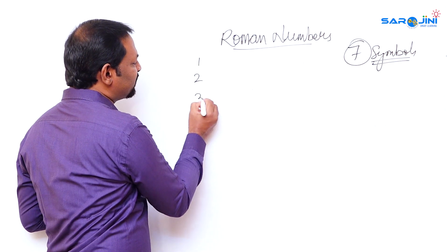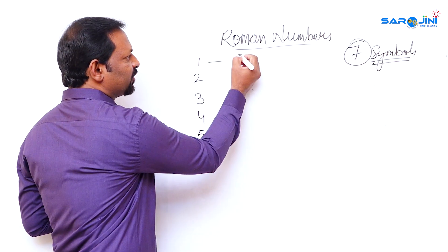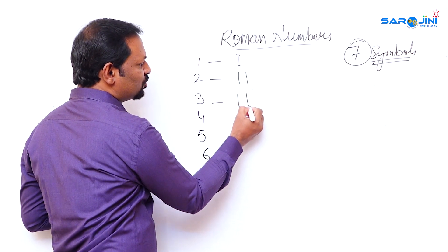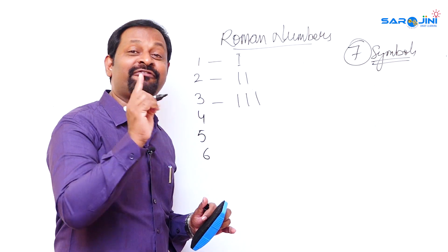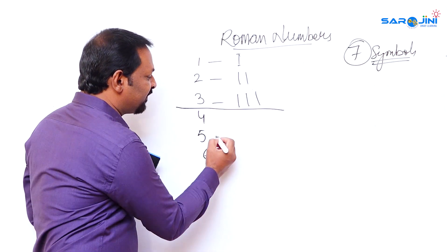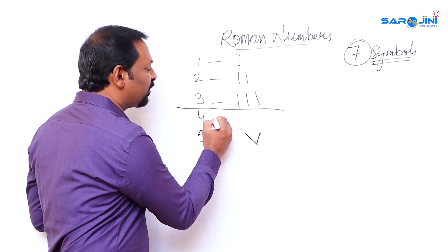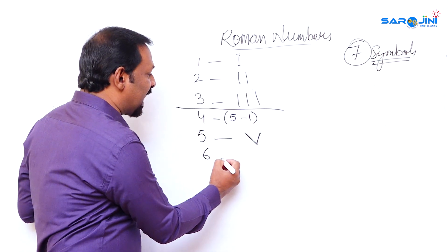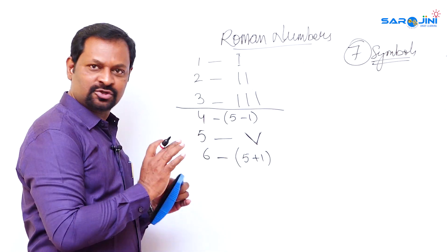Now let's take numbers one through six. One is simply I, two is II, three is III — these are straightforward. For four, five, and six there is a simple logic. Five is represented by V. Four is five minus one, so you write the one on the left side of V, giving IV. Six is five plus one, so the one goes on the right side of V, giving VI.